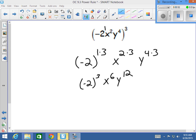Negative 2 to the third power is negative 8. So your final answer will be negative 8, x to the sixth, y to the twelfth.